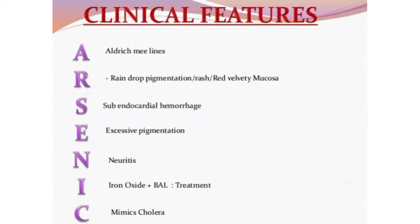The clinical features of arsenic poisoning are remembered by the mnemonic ARSENIC: A for Aldrich-Mees line, R for raindrop pigmentation and red velvety mucosa, S for sub-endocardial hemorrhage, E for excessive pigmentation, N for neuritis (inflammation of the neuron).